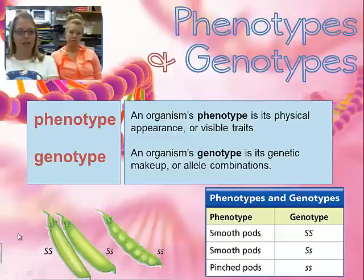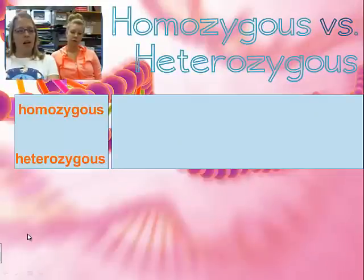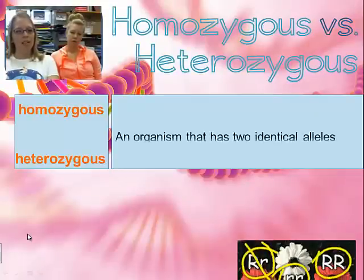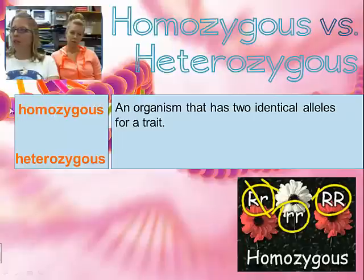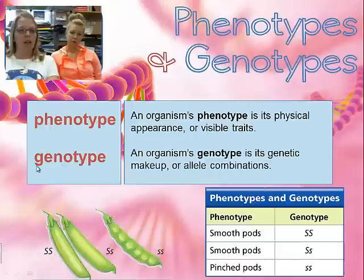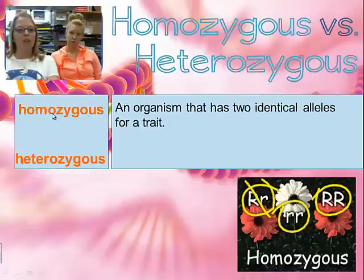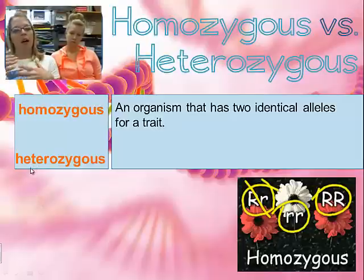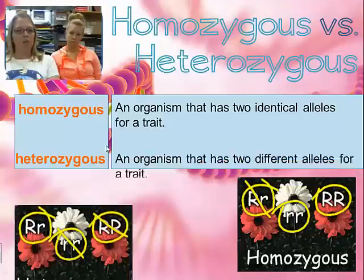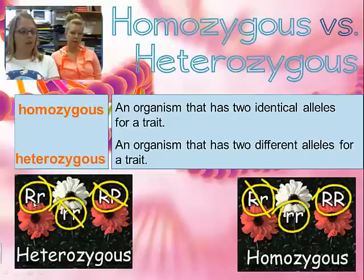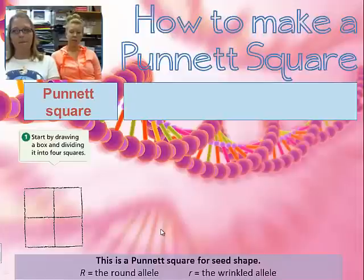Phenotype means physical; genotype means genetic. Two more words: homozygous and heterozygous. Homozygous — 'homo' means same — so you have the same identical alleles for a trait: two dominants or two recessives. Heterozygous — 'hetero' means different — so you have different alleles: one capital letter, one lowercase letter, making you a hybrid.